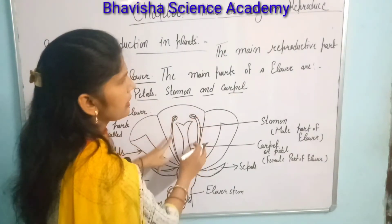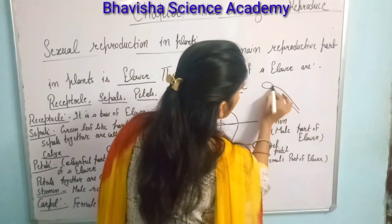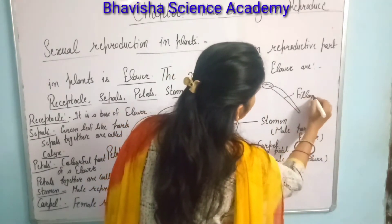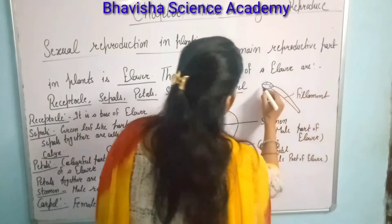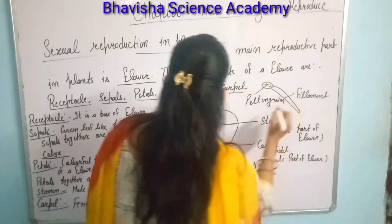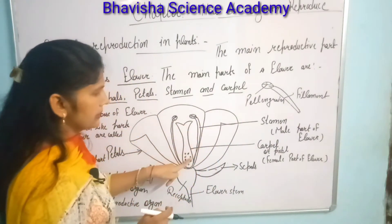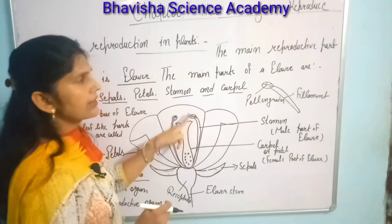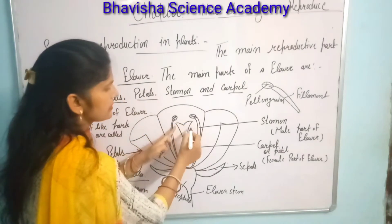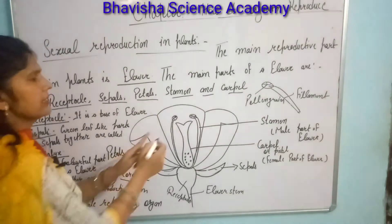The stamen has a tube-like structure with two parts: the filament and the pollen grain. The stamen is the male part of a flower. The filament supports the anther, and the pollen grains are the male gametes stored inside the anther.